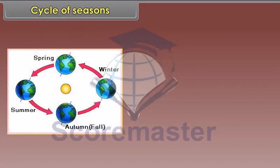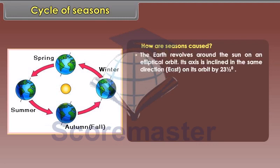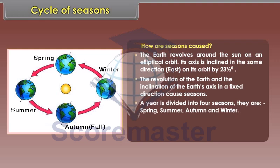Cycle of Seasons. How are seasons caused? The earth revolves around the sun on an elliptical orbit. Its axis is inclined in the same direction on its orbit by 23.5 degrees. The revolution of the earth and the inclination of the earth's axis in a fixed direction cause seasons. A year is divided into four seasons: spring, summer, autumn, and winter.